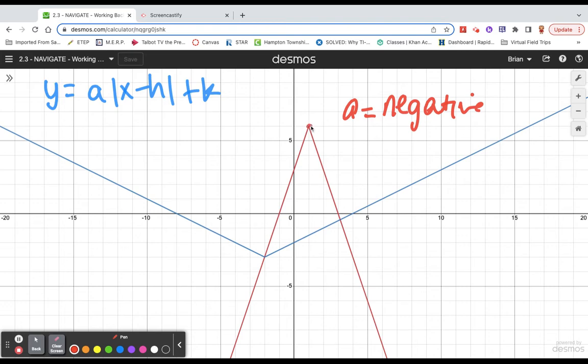Notice next that its vertex can be found at the point 1 comma 6. That means that this graph has moved one unit to the right and six units up.